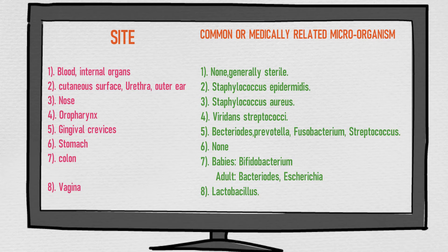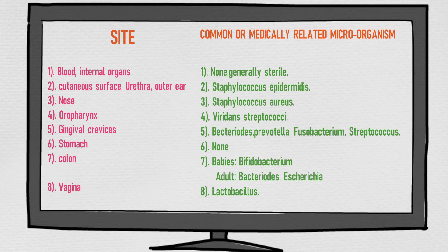On cutaneous surfaces including the urethra and outer ear, Staphylococcus epidermidis is found. In the nose, Staphylococcus aureus can normally be found. In the oropharynx, we can find Streptococcus viridans, including Streptococcus mutans.